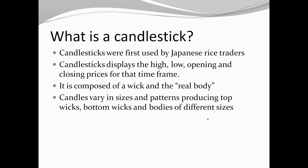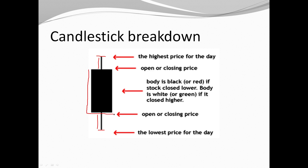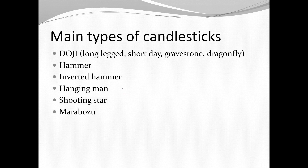I drew a small picture here to break down the candlestick. This is the top wick, which shows the highest price of the day, and this is the bottom wick, which shows the lowest price of the day. This is the real body of the candle — the top can show the opening or closing price, and the bottom can show the opening or closing price. If the candle is black or red, it means the stock closed lower than the opening price. If the body is white or green, it closed higher than the opening price.